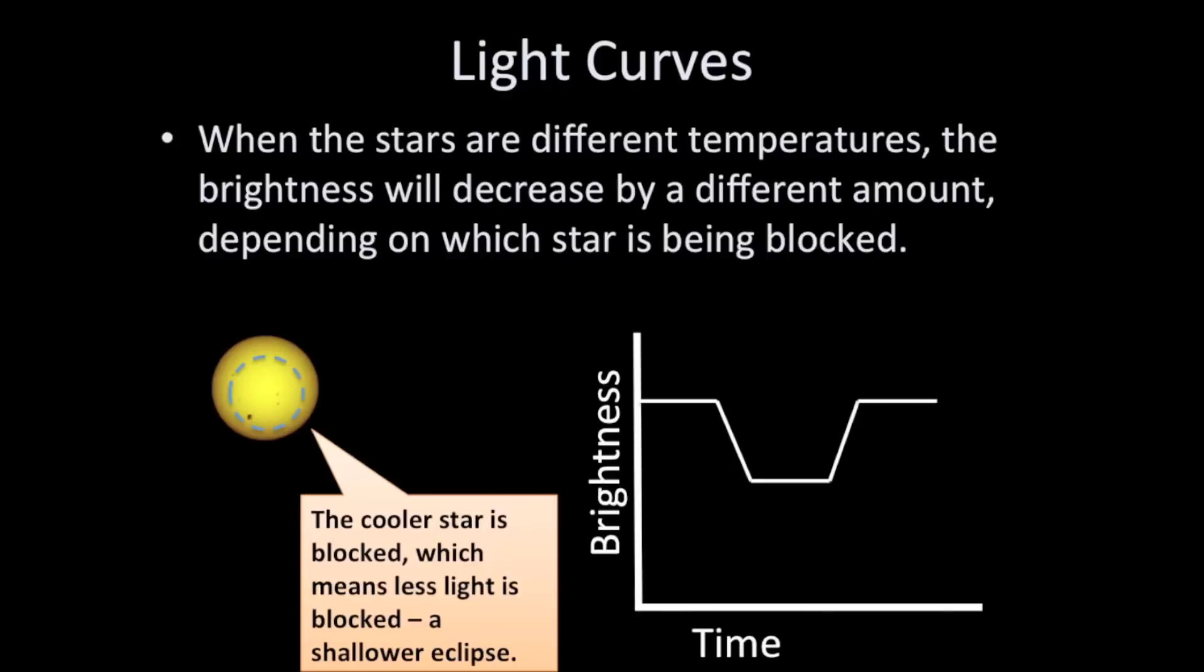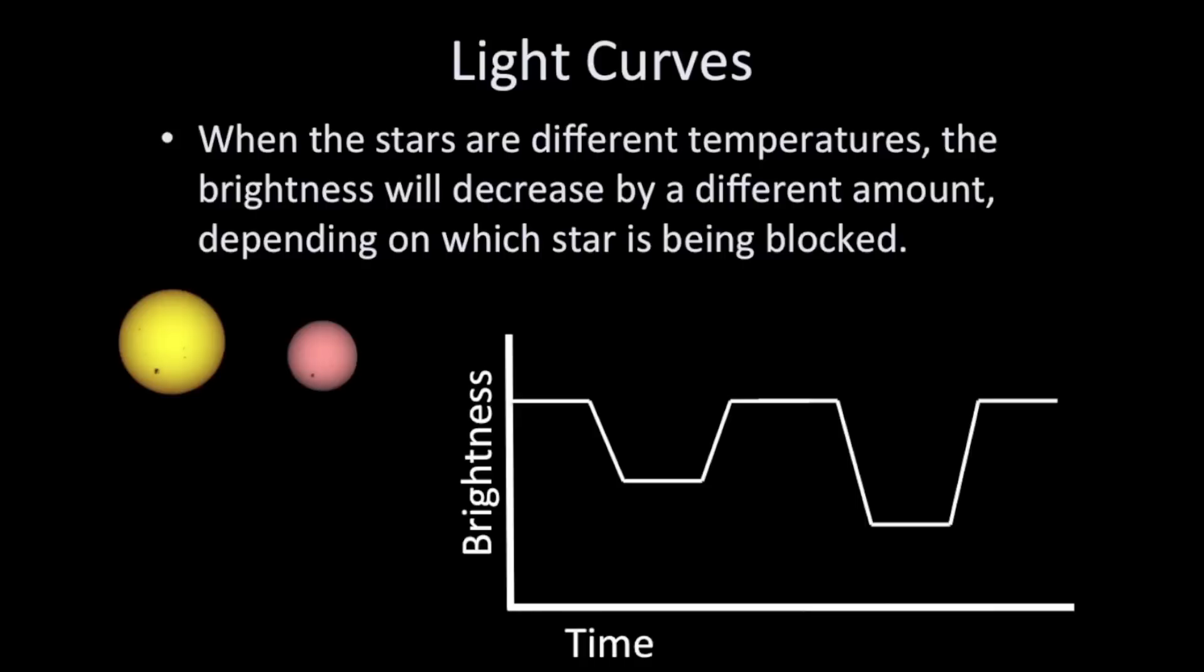However, the red star isn't giving off as much light because it's lower in surface temperature. So when the yellow star blocks out the red one, we don't lose as much light and the dip doesn't go down as far.